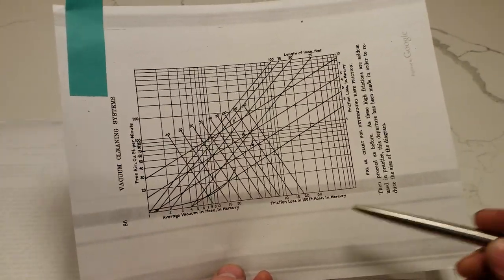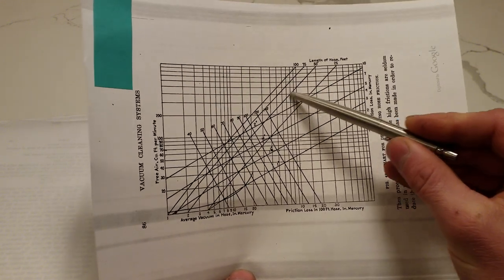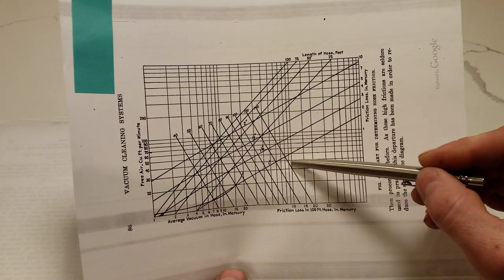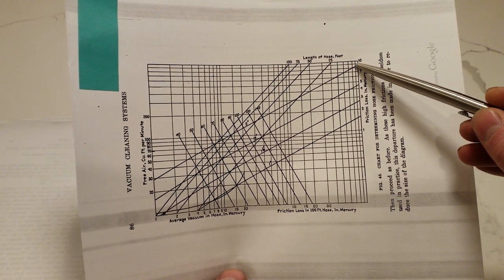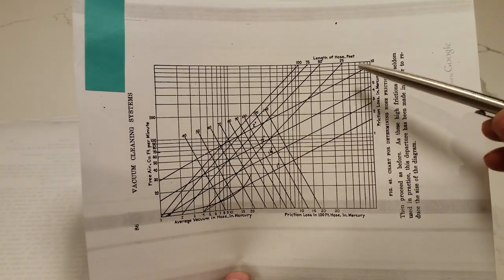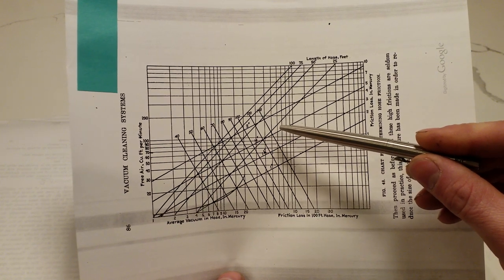Here's a chart with the friction loss of different hoses based on the length of the hose from 25 to 100 feet. And the diameter of the hose. And you can see, you can have up to 10 inches of friction loss, up to 130 inches of water lift lost through a hose.